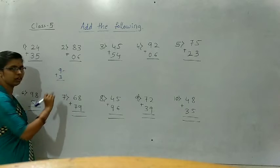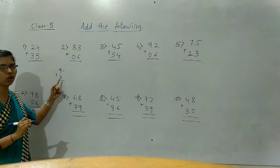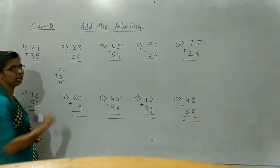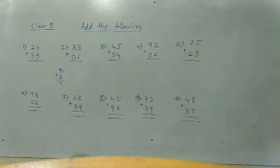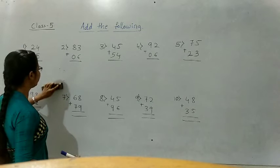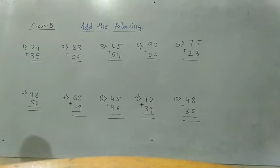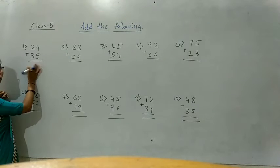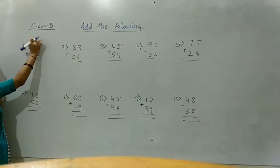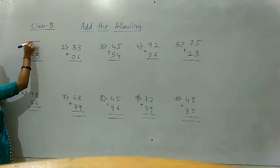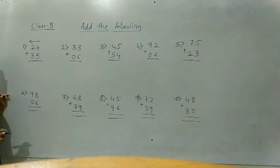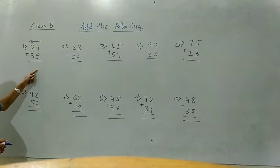You should fold 9 fingers and count after 3 — whichever answer comes, you should write it. Now we are going to begin studying about 2-digit numbers. Add the following 2-digit numbers. While adding 2-digit numbers, we should start from the ones place — this direction first. We should add these two first, then next these two.